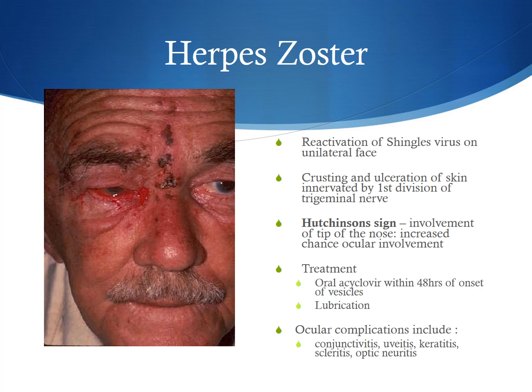The treatment of the eye involves typically lubrication. The patient will need oral acyclovir within 48 hours of the onset of the vesicles to treat the rash, and lubrication is important for the eye for comfort. Ocular complications to monitor for would be conjunctivitis, uveitis, keratitis, scleritis, or even optic neuritis, which should be managed appropriately.